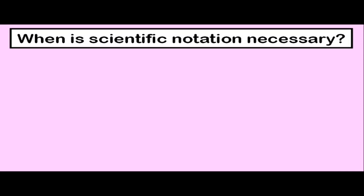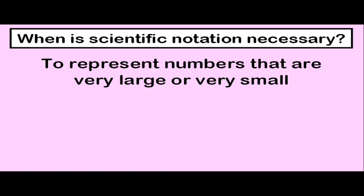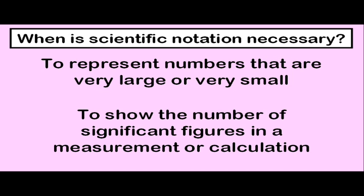So when is scientific notation necessary? It generally tends to be used for numbers that are either very large or very small. Scientific notation is a way of abbreviating a number so that you don't have to write all of those zeros out on your paper. When you can simplify a number and avoid writing all of those zeros, then scientific notation is a great method. Another important application of scientific notation is it will show you the number of significant figures in a measurement or calculation.